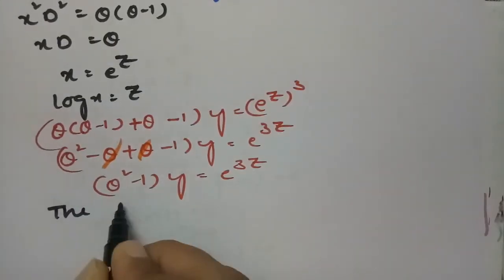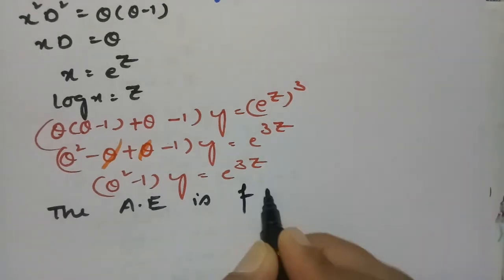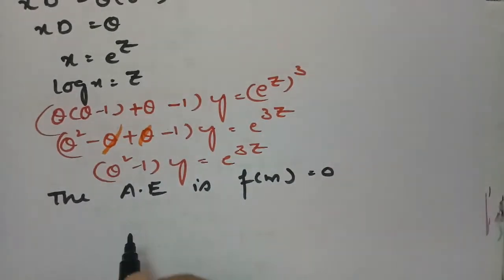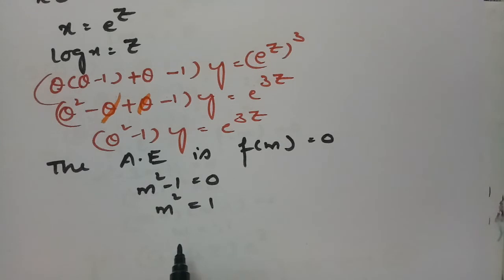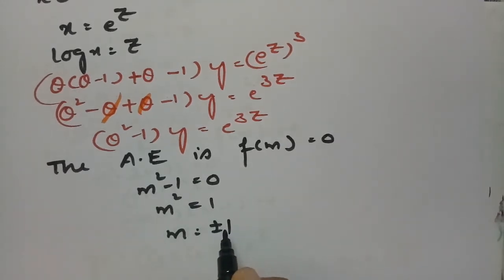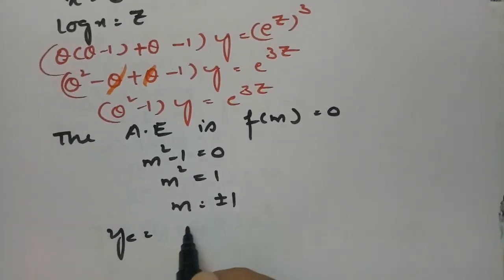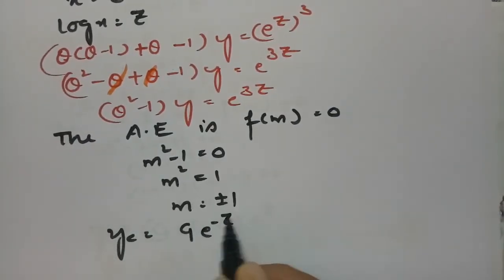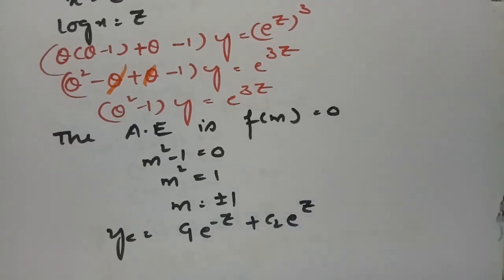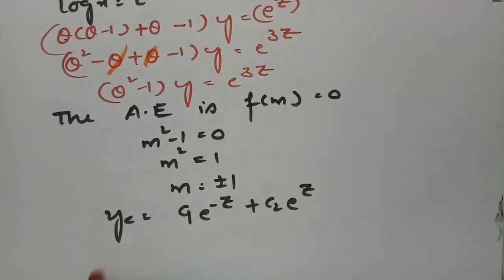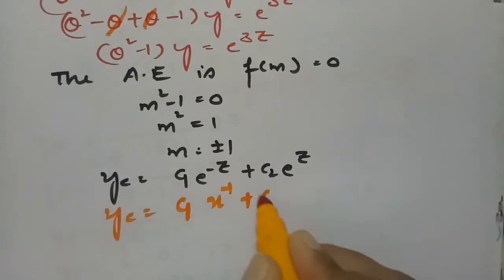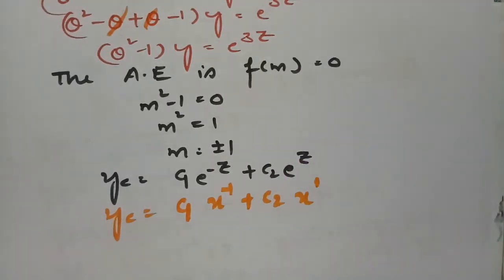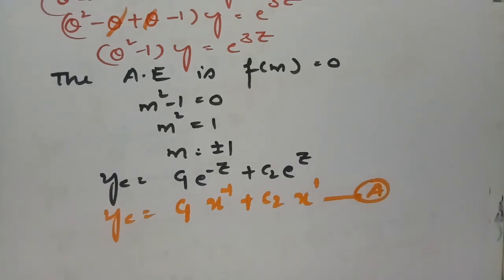The auxiliary equation is f(m) = 0, so m² - 1 = 0, giving m² = 1, hence m = ±1. The complementary factor is yc = c1·e^(-z) + c2·e^z. Transforming back using e^z = x: yc = c1·x^(-1) + c2·x.